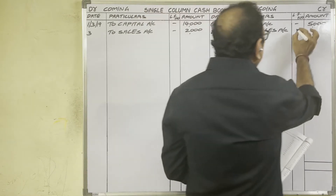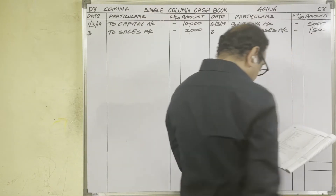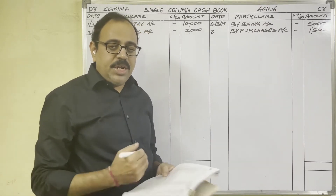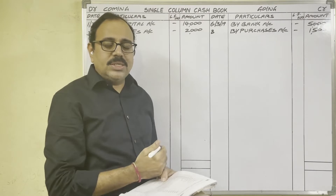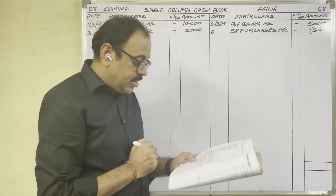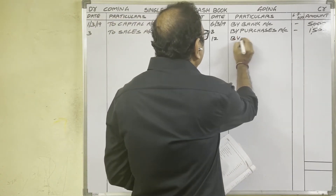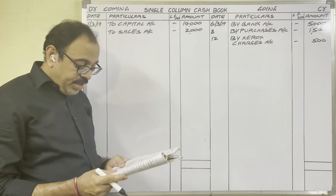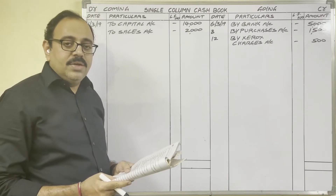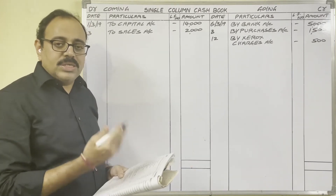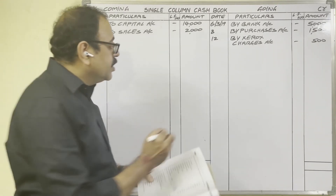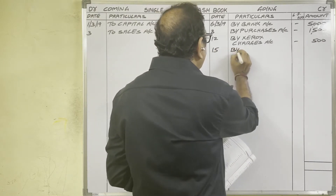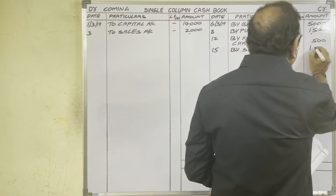12th day: xerox charges 500 rupees. We paid xerox charges so cash is going out — credit side. Write: By Xerox Charges account, 500 rupees.